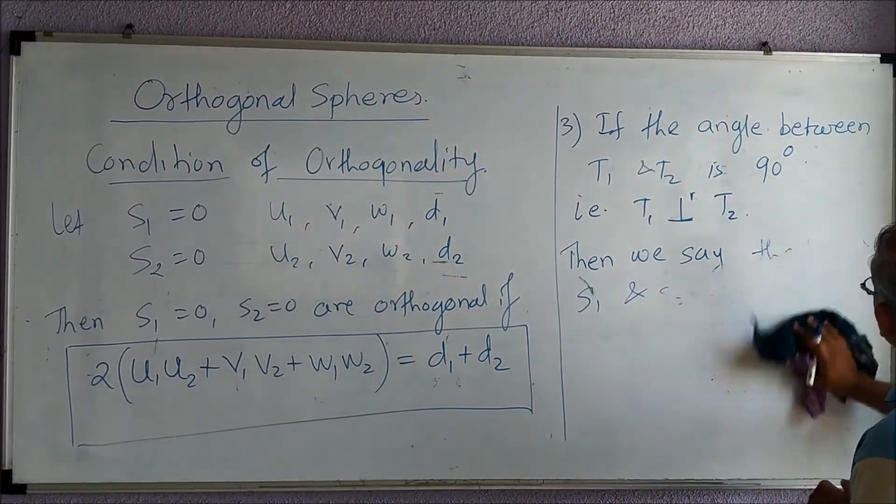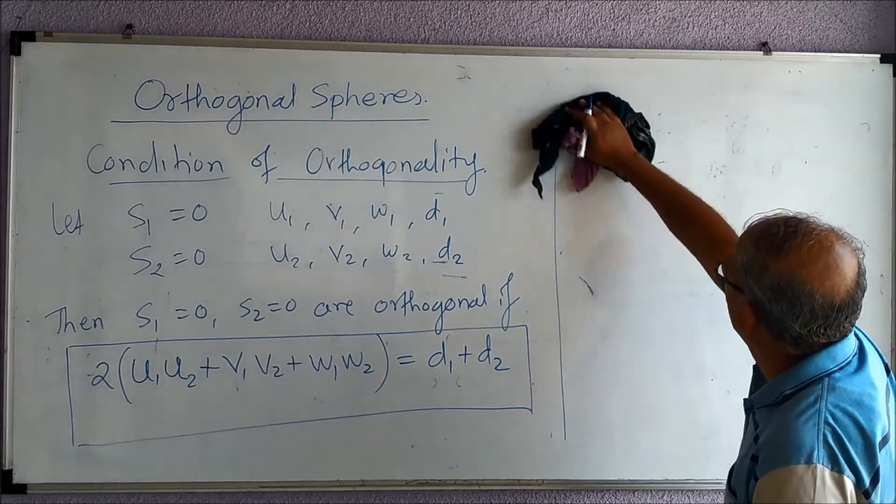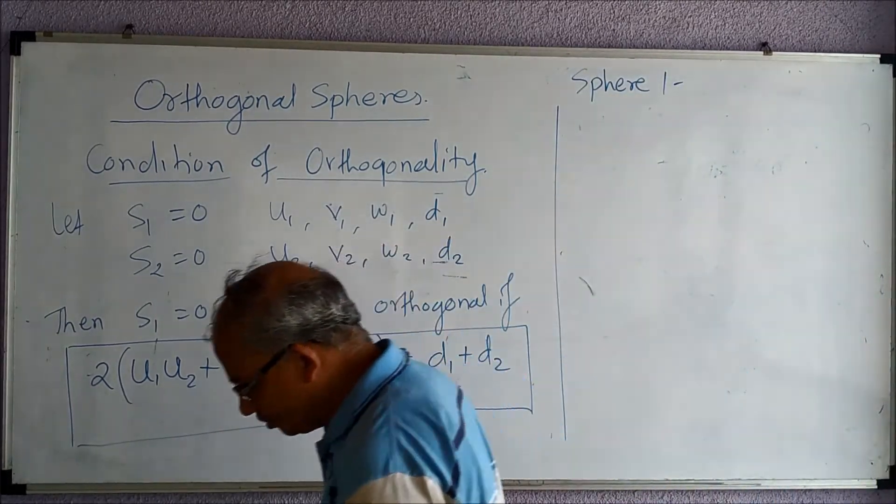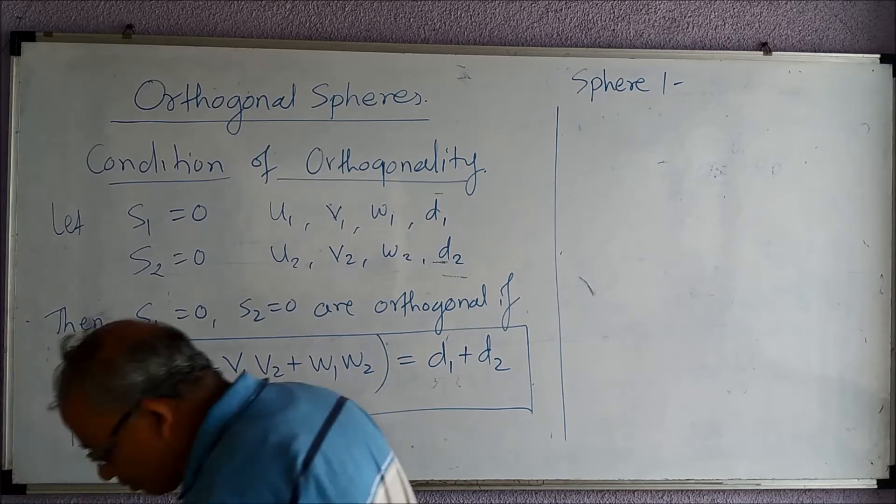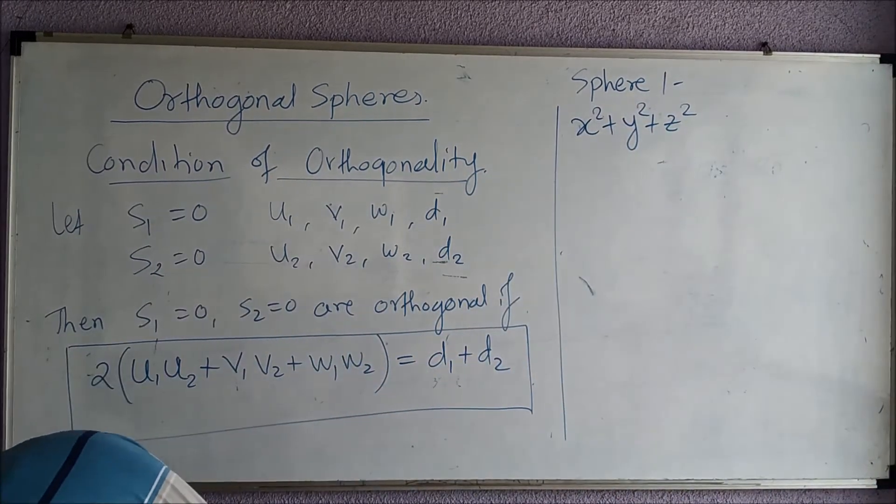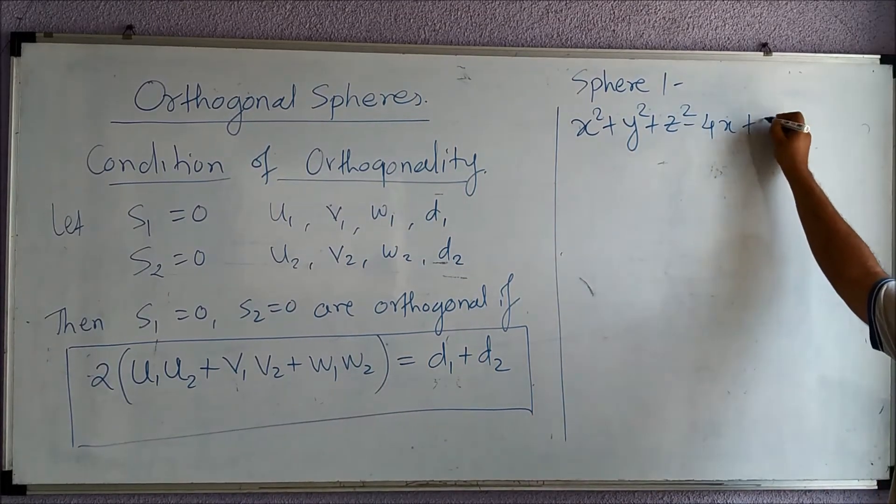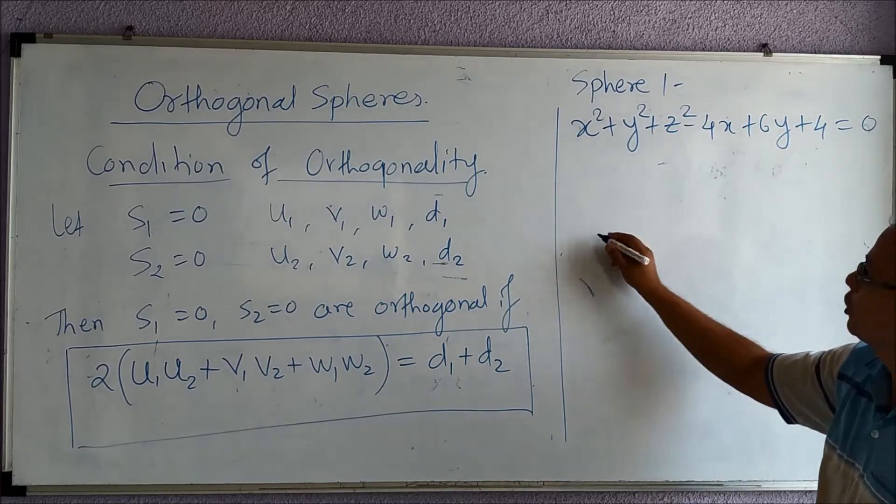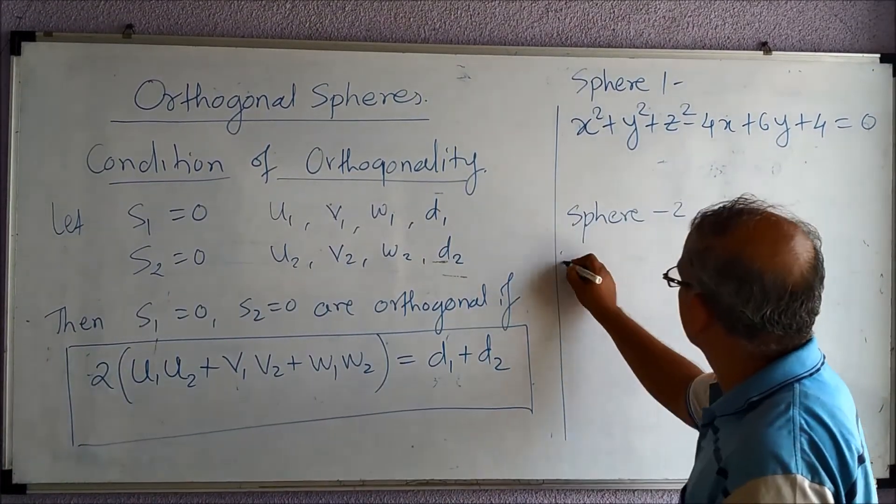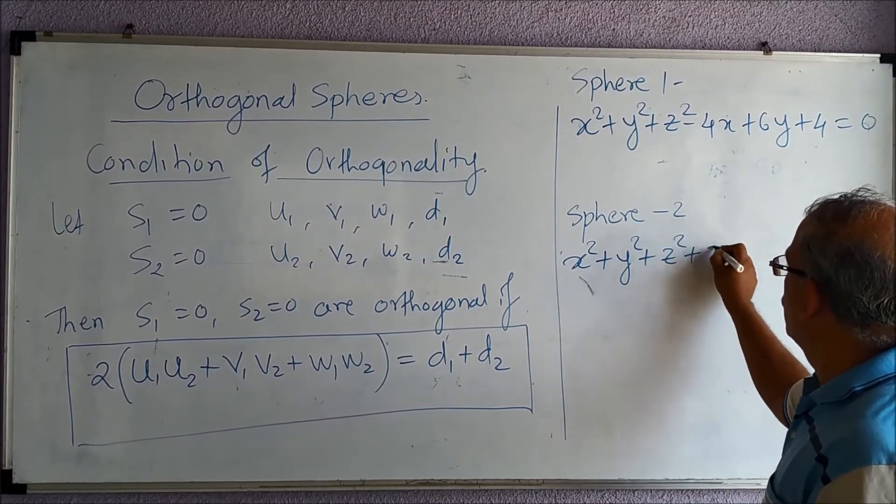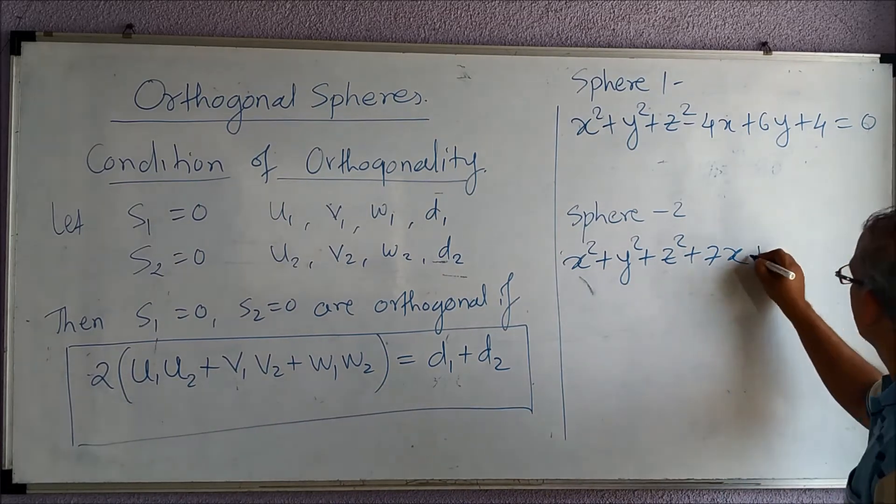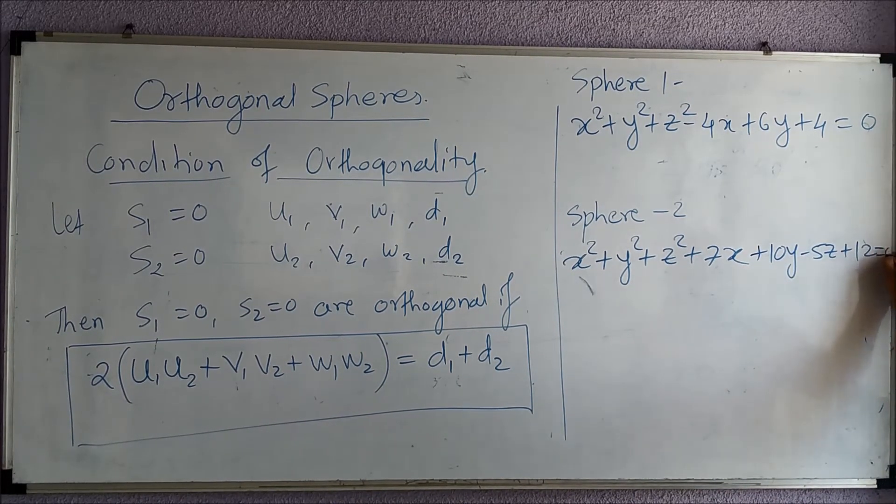Let us consider two spheres here and we can immediately find out whether they are orthogonal or not. Sphere 1: x² + y² + z² - 4x + 6y + 4 = 0. Sphere 2: x² + y² + z² + 7x + 10y - 5z + 12 = 0.